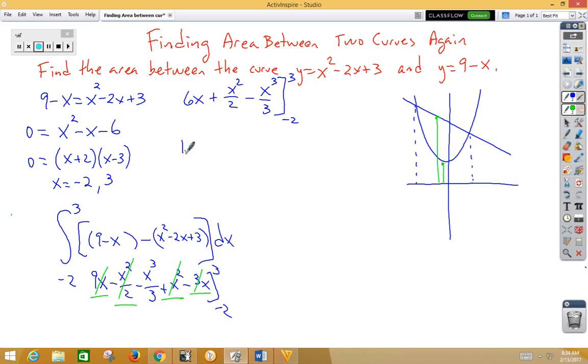...we're going to get 18 plus 9 halves minus 27 thirds minus... And when we plug in the negative 2, we're going to get a negative 12 plus a 2 plus an 8 thirds.